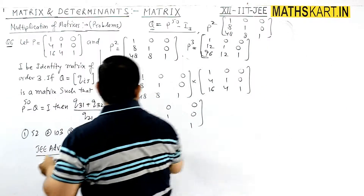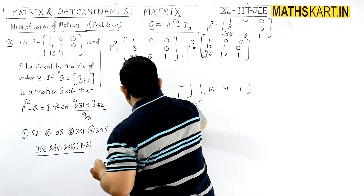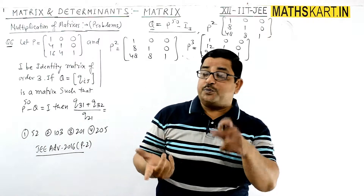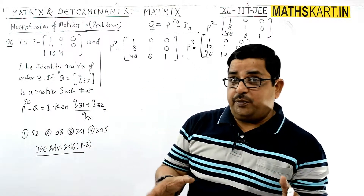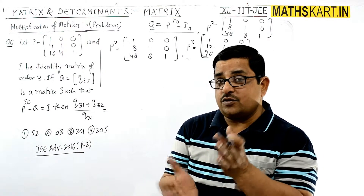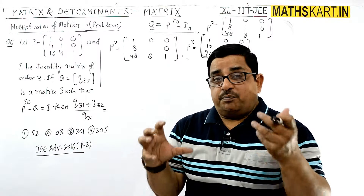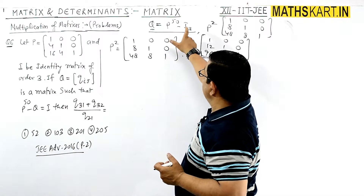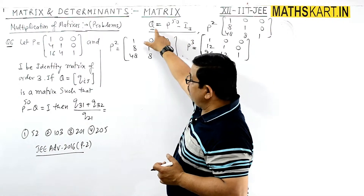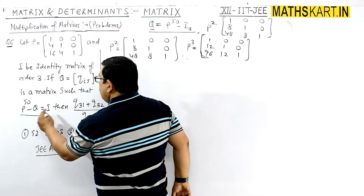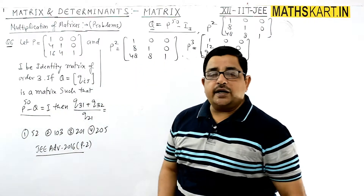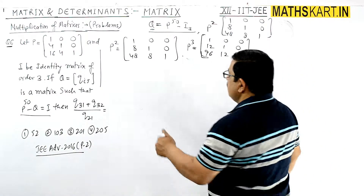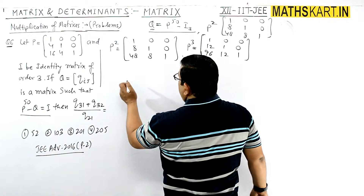We need to find the (3,1) position for P to the power n. After finding P to the power n, we place n equals 50 to get P to the power 50. Then substituting into Q equals P to the power 50 minus I3 gives us the Q matrix.